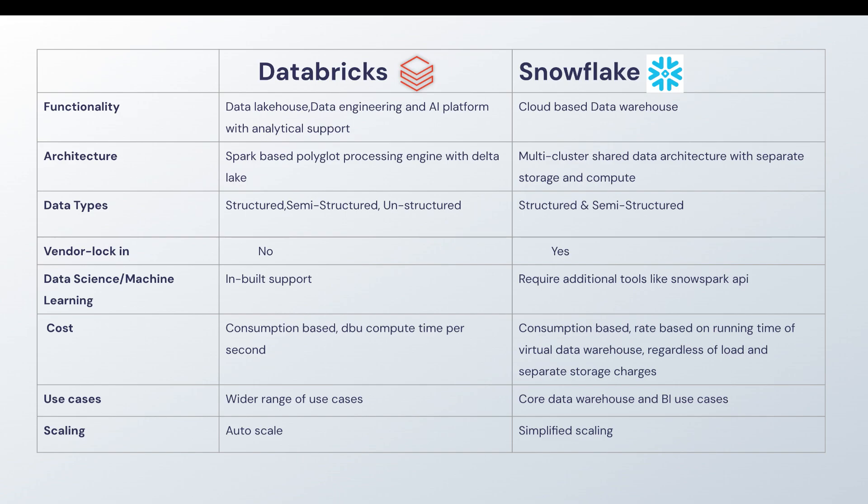When you talk about data types — what kind of data you can process — in Databricks you can process all types of data: structured, semi-structured, and even unstructured data. But in Snowflake you can only process structured or semi-structured data types, like JSON. This becomes a major contrasting feature between the two technologies. If your workloads involve a lot of unstructured data, you would prefer Databricks over Snowflake.